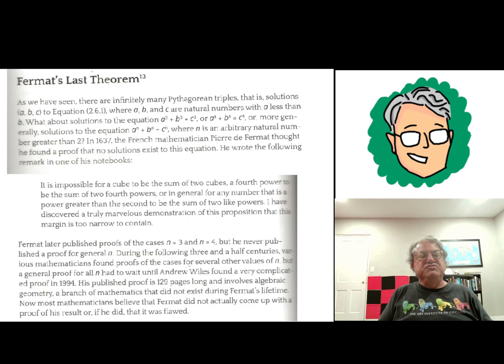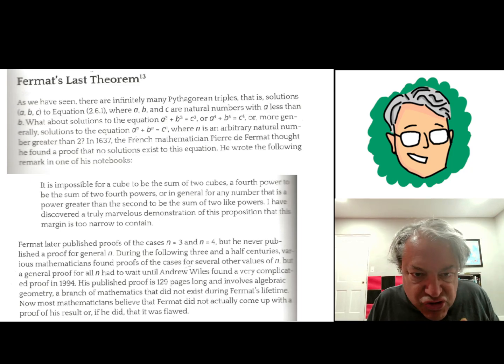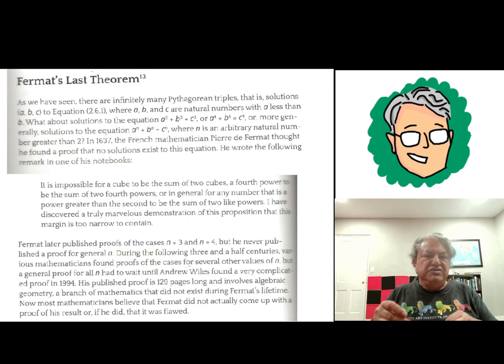But he came up with this result, which he thought he proved. And he even has a note. He said, it's impossible for a cube to be the sum of two cubes, a fourth power to be the sum of two fourth powers, or in general for any number that is a power greater than the second to be the sum of two like powers. I have discovered a truly marvelous demonstration of this proposition that this margin is too narrow to contain. He wrote this in one of his notebooks back in 1637, if I'm not mistaken. But he never provided a proof.